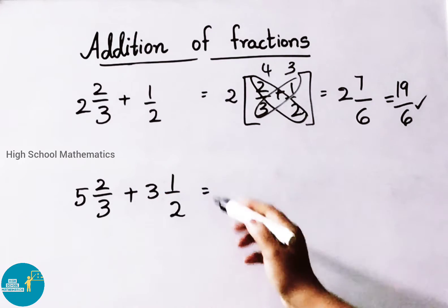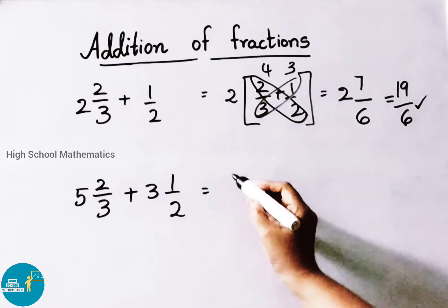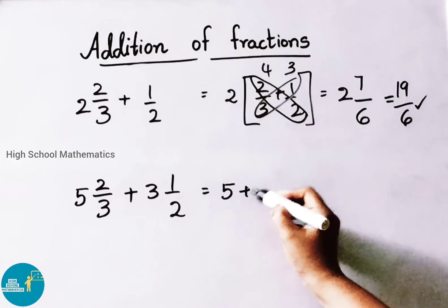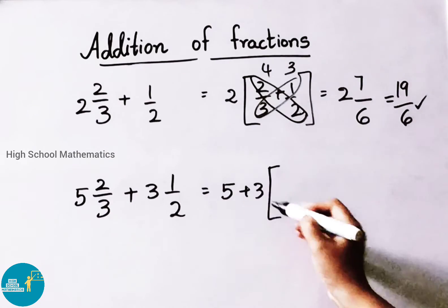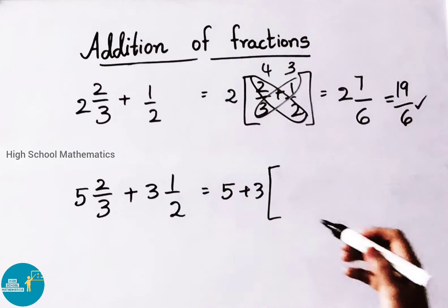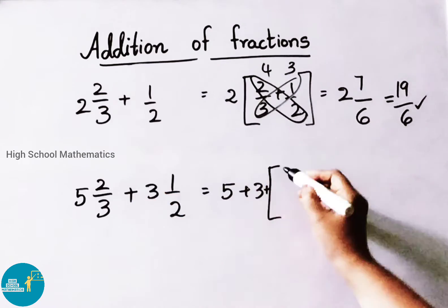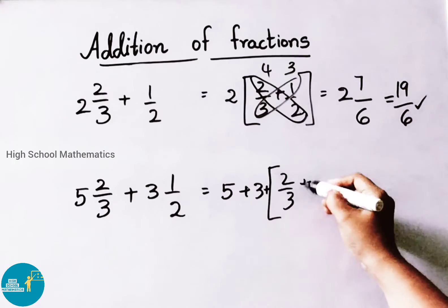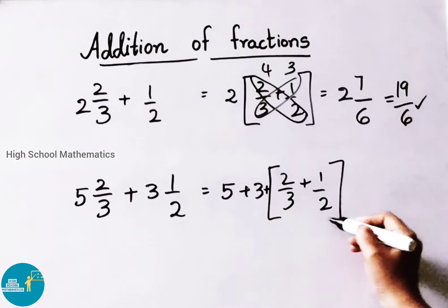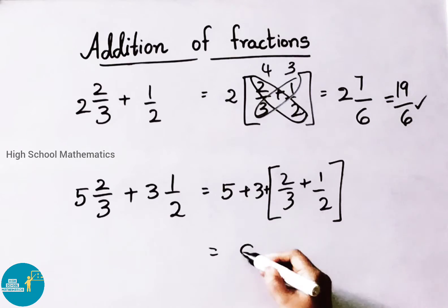See another example. 5 and 2 by 3 plus 3 and 1 by 2. Let us write these whole numbers 5 plus 3 separately. And we shall take these fractions also separately. 2 by 3 plus 1 by 2. 5 plus 3, write down 8.